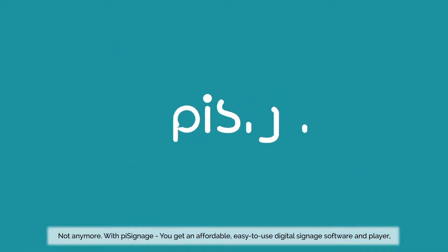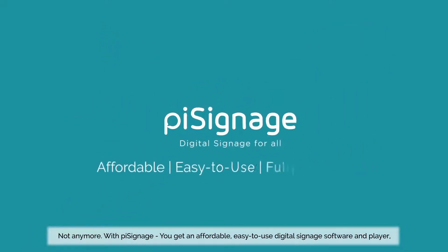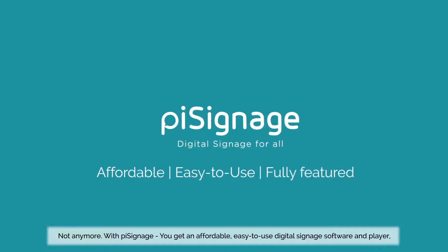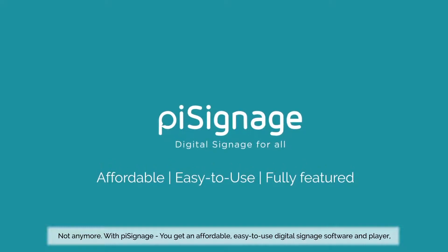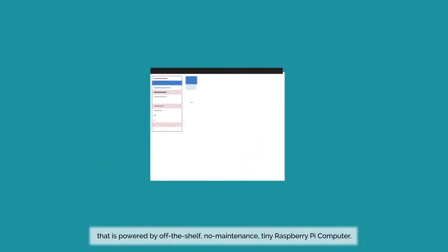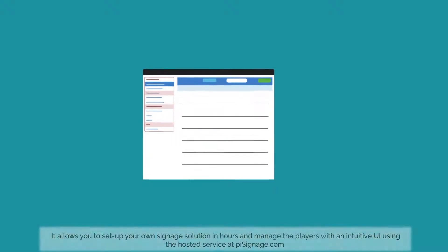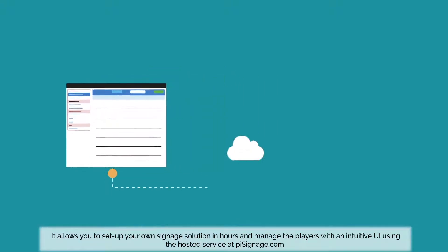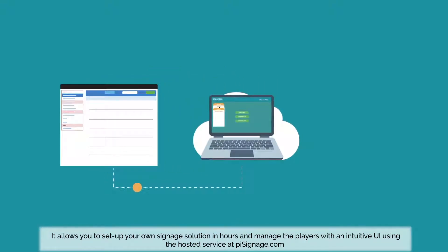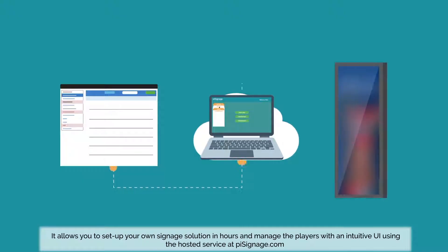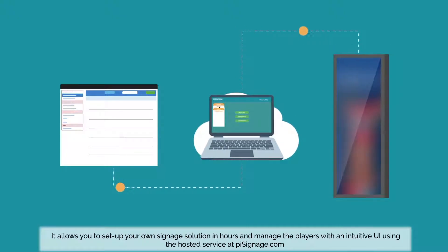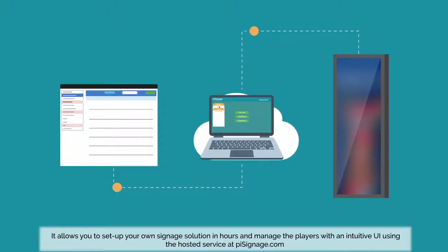With Pi Signage you get an affordable, easy-to-use digital signage software and player that is powered by an off-the-shelf, no-maintenance, tiny Raspberry Pi computer. It allows you to set up your own signage solution in hours and manage the players with an intuitive user interface.